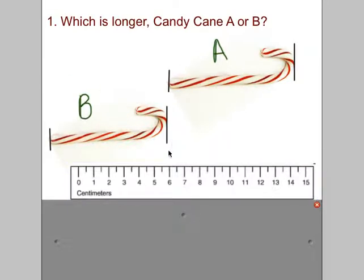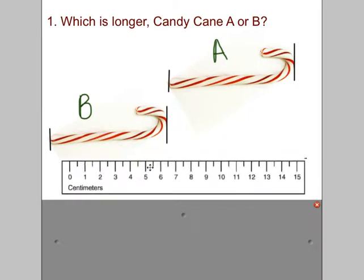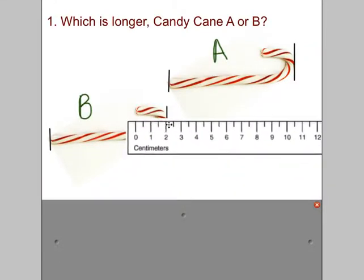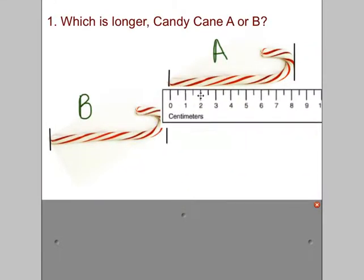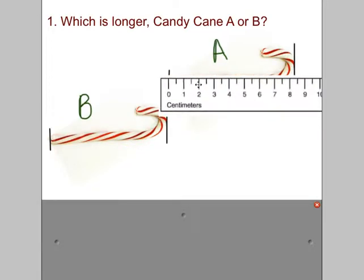Well, the first thing we're going to do is measure this. I have a centimeter ruler down below here marked with centimeters. There's even half centimeters in between the lines. And I even drew the lines at the ends of the candy canes to make measuring from tip to tip easier. Let's go ahead and take a look at candy cane A.